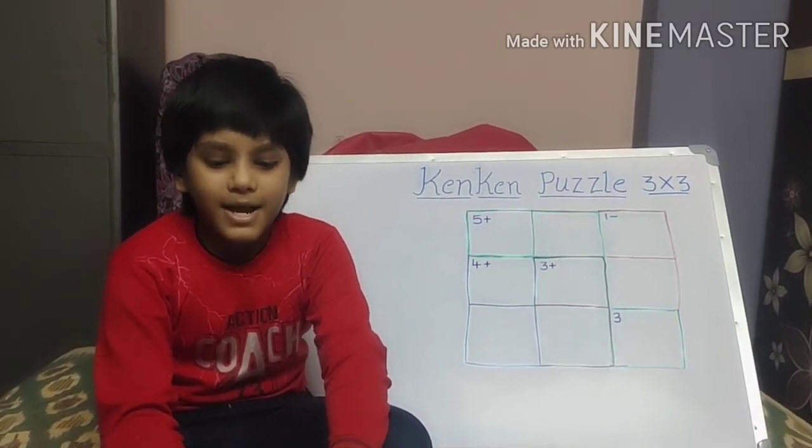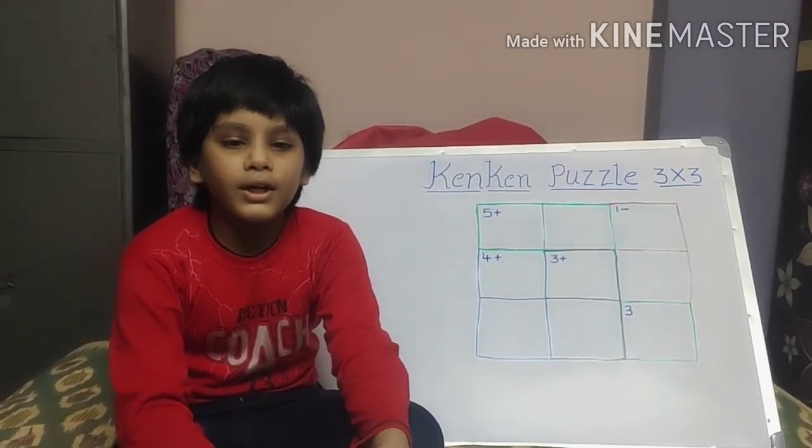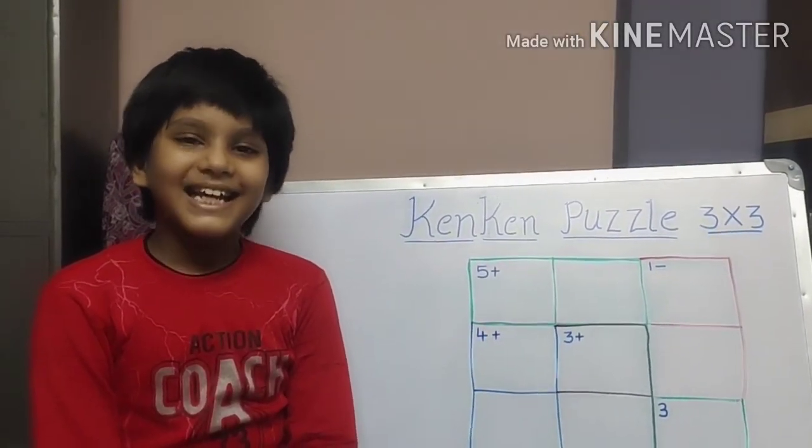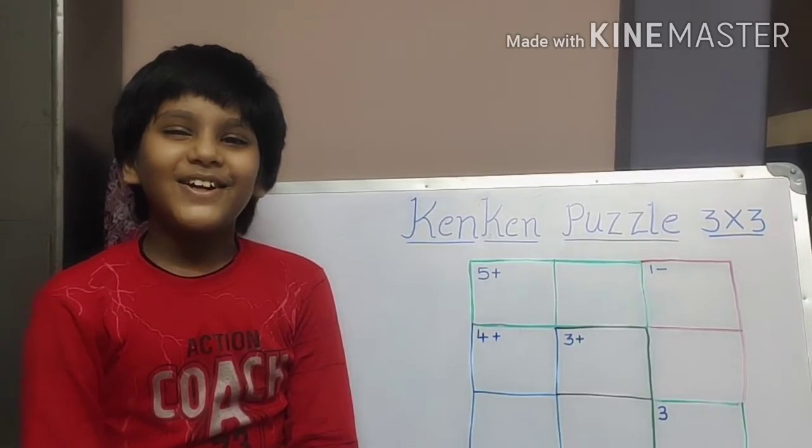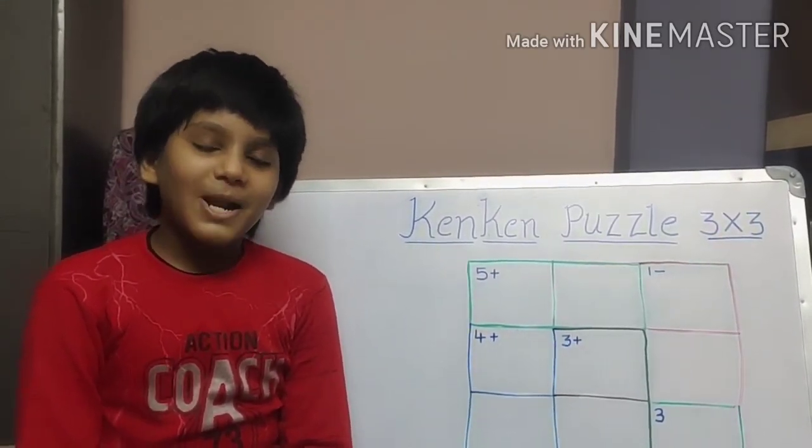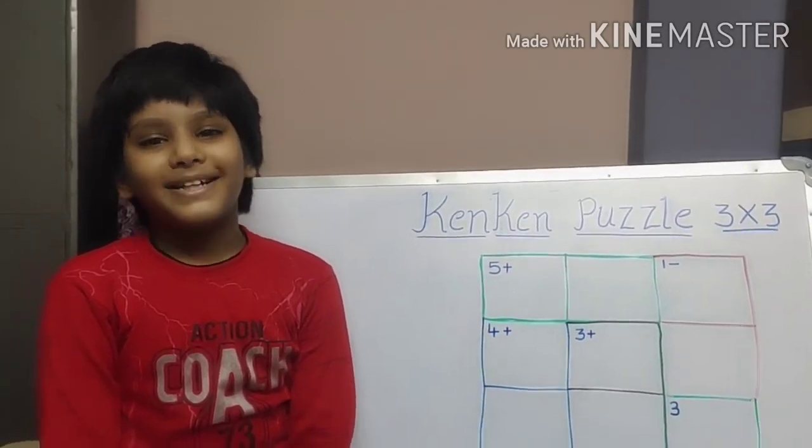If there is six by six we have to use one to six numbers. Each row contains exactly one of each digit. Each column contains exactly one digit.